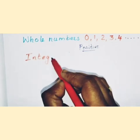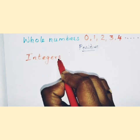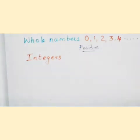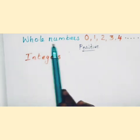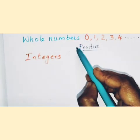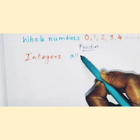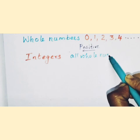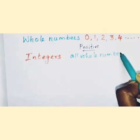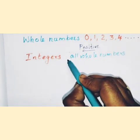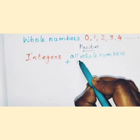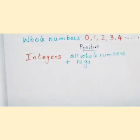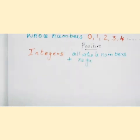Negative numbers are included with integers. What are integers? Let us see. Integers are whole numbers and negative numbers. That is whole numbers 0, 1, 2, 3, 4, etc. till infinity plus the negative numbers. That is minus 1, minus 2, minus 3, minus 4, etc. till infinity. So integers are all the whole numbers plus negative numbers.